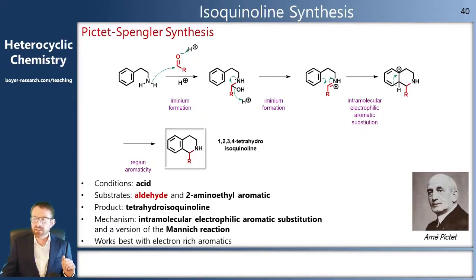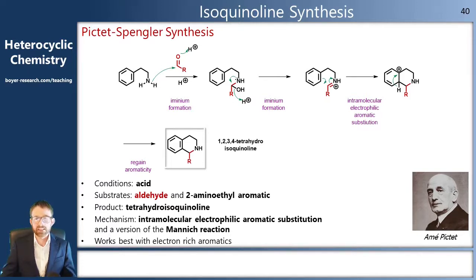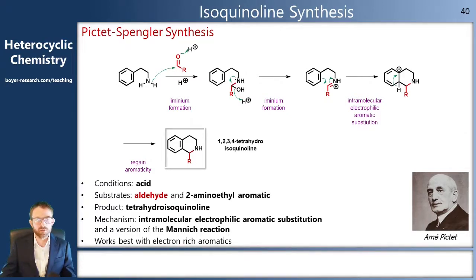Finally, we will regain aromaticity by losing our hydrogen, and that will give us our tetrahydroisoquinoline product. This reaction works better the more electron-rich the aromatic ring is — so if there's something like a methoxy group on the ring, that's ideal.